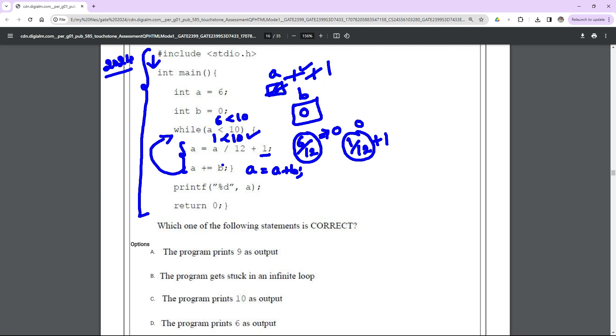Now a equal to a plus b, which means b value is 0, a value is 1, so again it will be updated by 1. So guys, with one iteration you can directly say that this is going to be an infinite loop because b value is not going to modify anywhere, only a value is going to modify and that modified value is also 1.